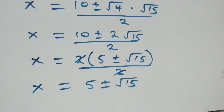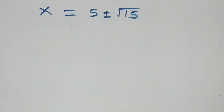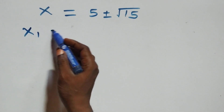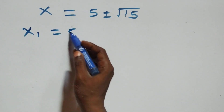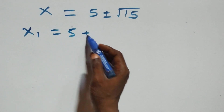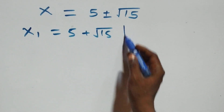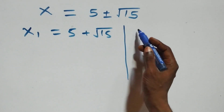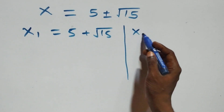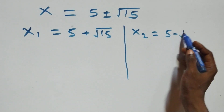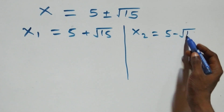This implies we have two possible values of x: the first one, x₁ equals to five plus root fifteen, and the second one, x₂ equals to five minus root fifteen.